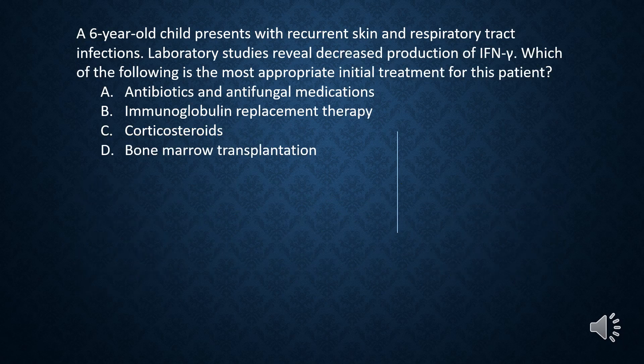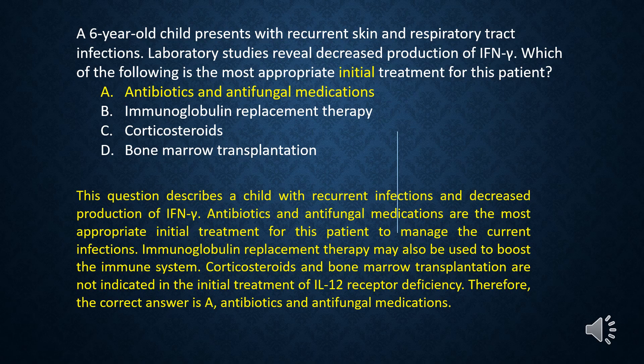A 6-year-old child presents with recurrent skin and respiratory tract infections. Laboratory studies reveal decreased production of interferon gamma. Which of the following is the most appropriate initial treatment for this patient? A. Antibiotics and antifungal medications. B. Immunoglobulin replacement therapy. C. Corticosteroids. D. Bone marrow transplantation. The answer is A, antibiotics and antifungal medications.